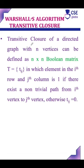What is transitive closure in Warshall's algorithm? Transitive closure of a directed graph with n vertices can be defined as an n × n boolean matrix T = {t_ij} in which the element in the i-th row and j-th column is 1 if there exists a non-trivial path from i-th vertex to j-th vertex. Otherwise, t_ij = 0.